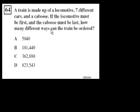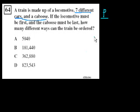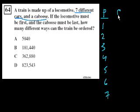We don't even have to worry about the locomotive and the caboose — they're always in the same position. We just have to worry about the seven different cars and the order they're in. So positions 1 through 7: for position 1 we have seven cars to choose from. We've picked one, then in slot 2 we have six cars to pick from, slot 3 we have five, slot 4 four cars, and so on.